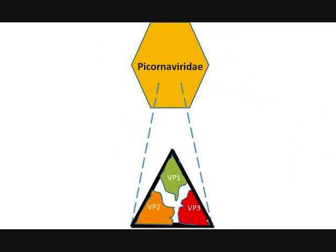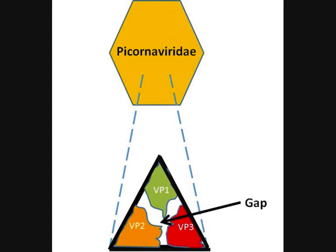Naked viruses, such as Picornaviridae, do not have an envelope. They have a canyon-like surface capsid. The capsid is icosahedral, and each of the twelve corners or vertices forms the intersection of five triangular faces. Each triangular face has three structural proteins. Amino acids found in these gaps or canyons are responsible for attachment.